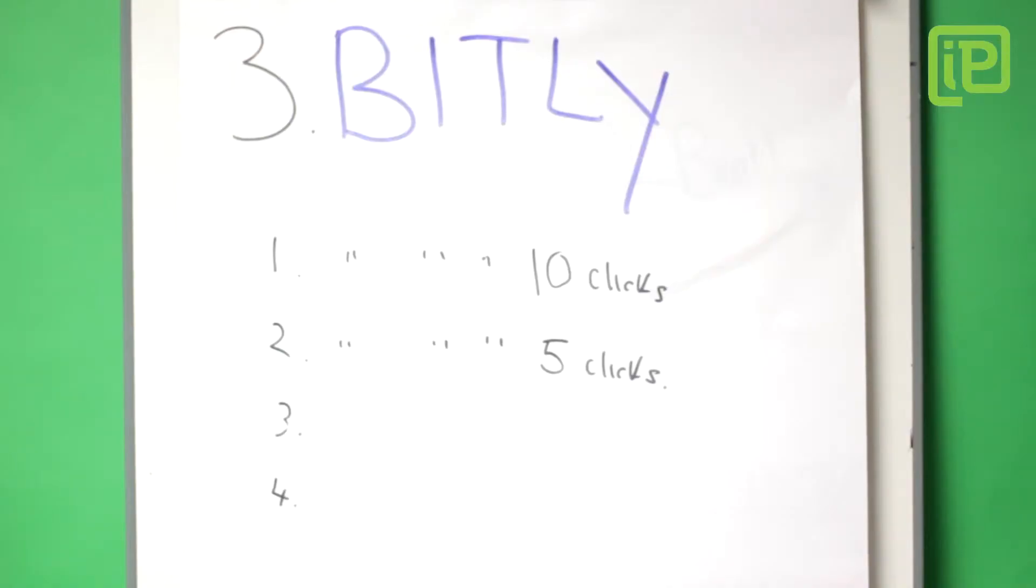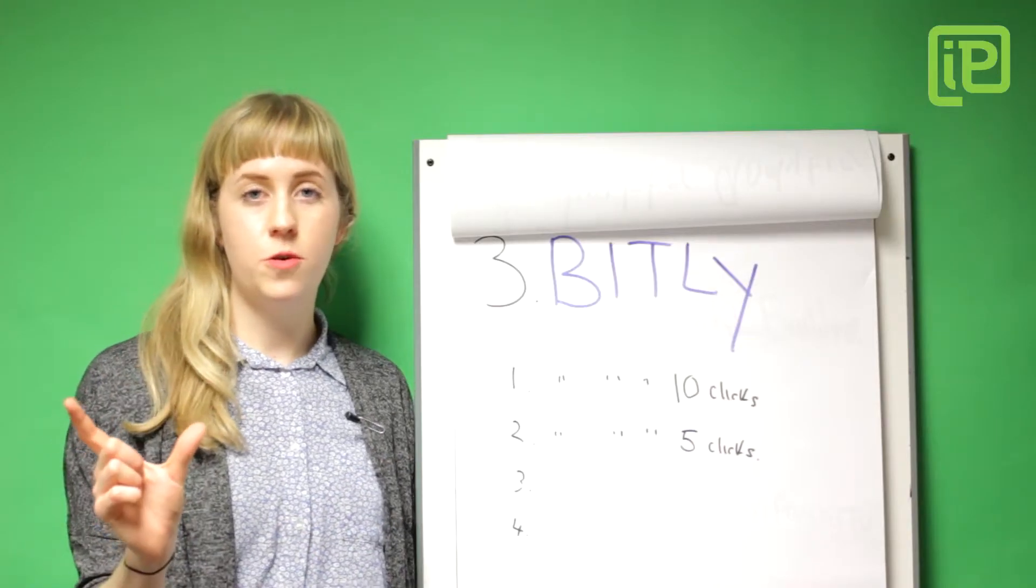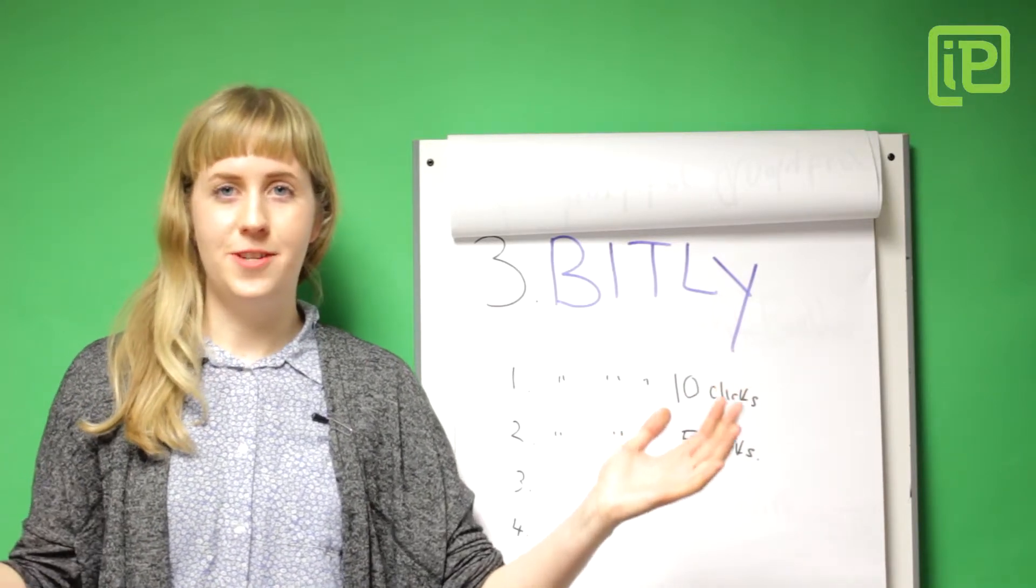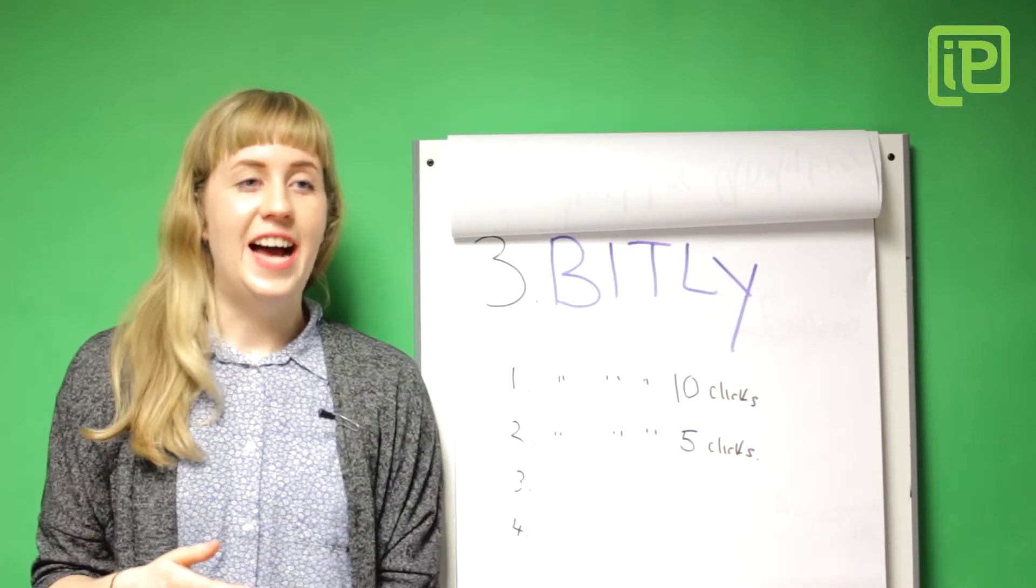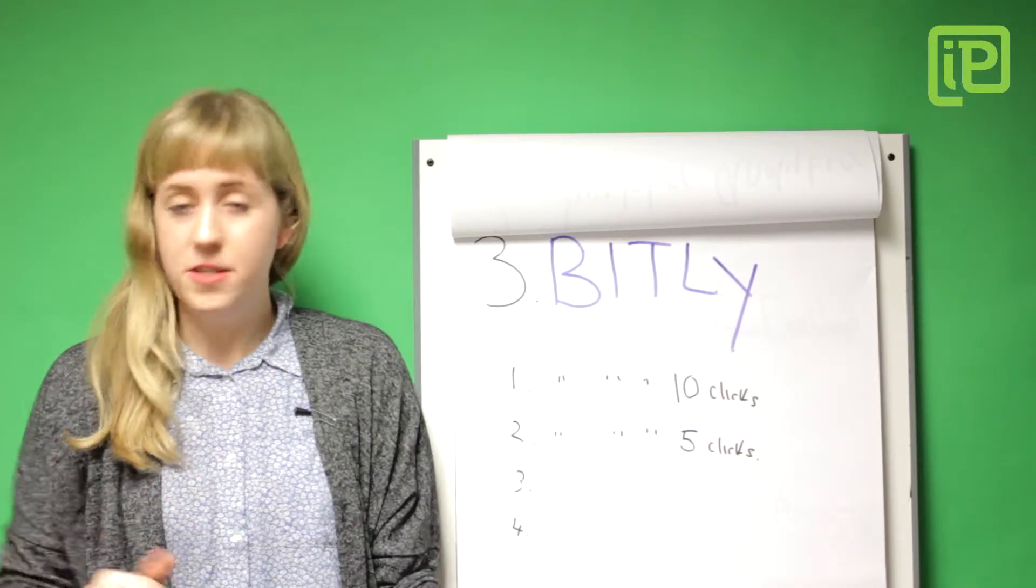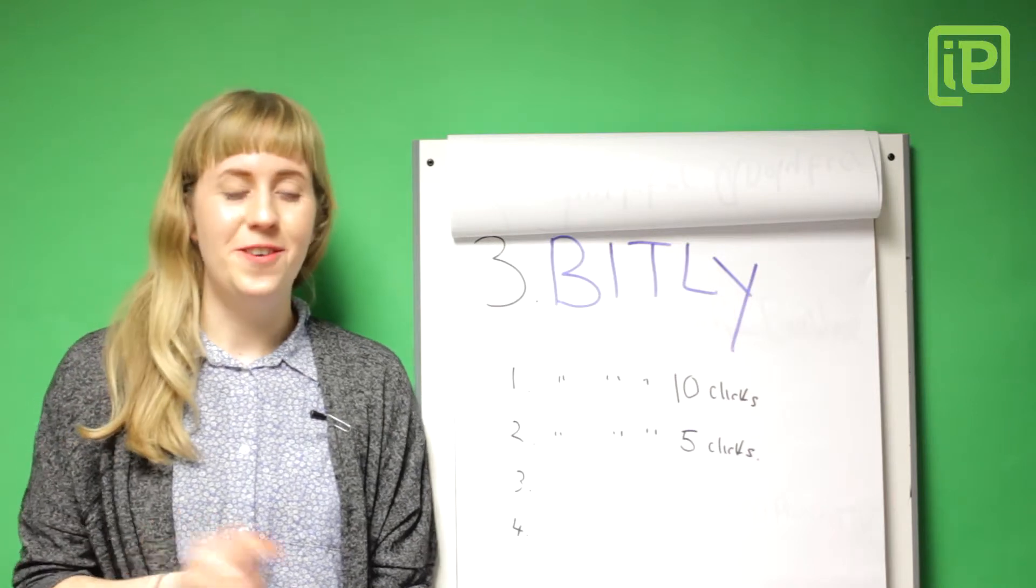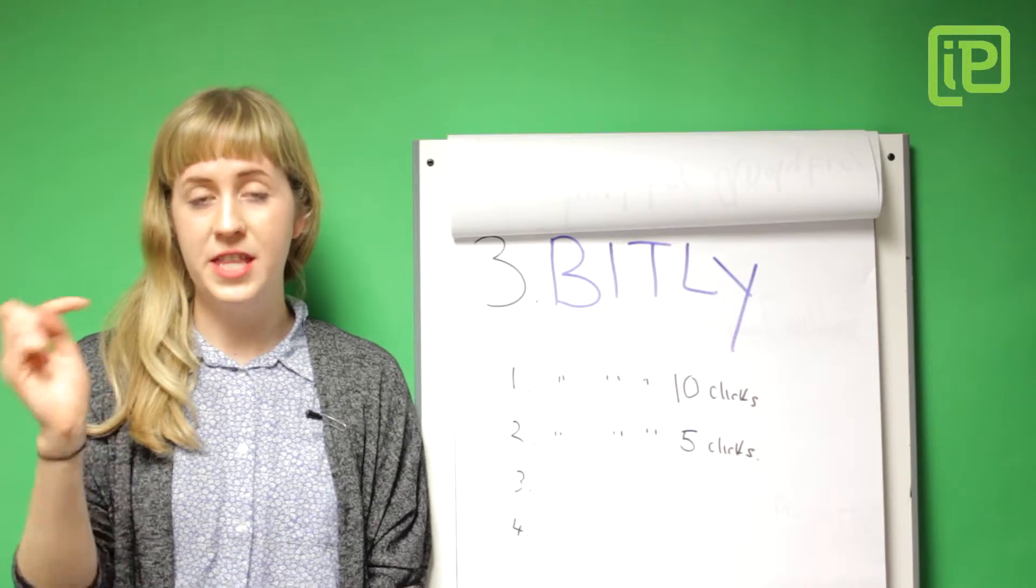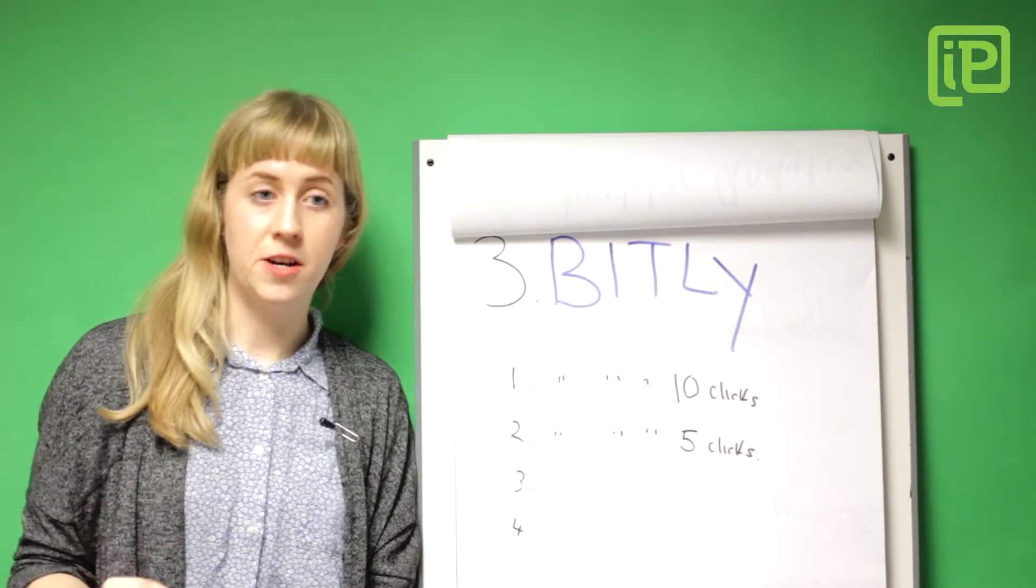Number three is Bitly. So Bitly is a URL shortener, so if you have a really long URL such as iProspectTV forward slash the best blog in the world and you don't want to throw that onto Twitter because it just looks really long and not very nice to look at, you stick it into Bitly and then shorten it. What's great about Bitly is once you have an account which is free, you can track the amount of clicks that individual Bitly link got.